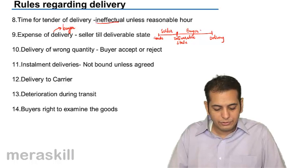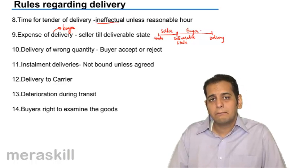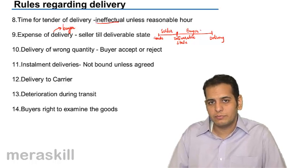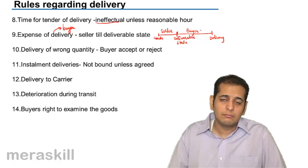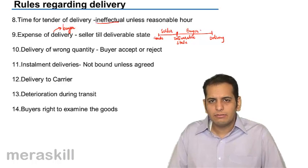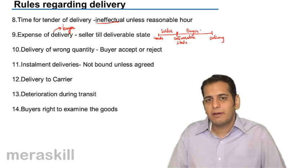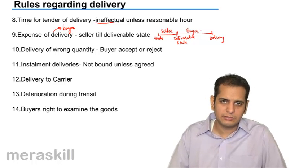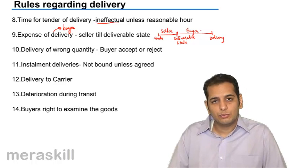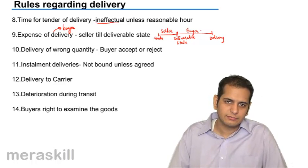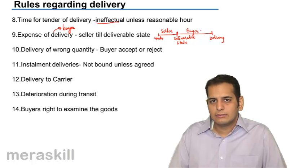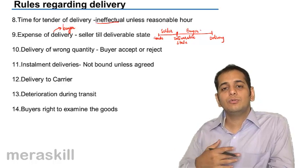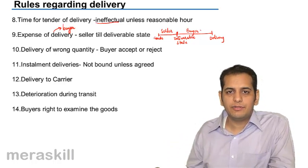Installment deliveries — this is different from part delivery. For example, you contracted for 100 bags of cotton, but only 80 bags were available with the seller. He sends the 80 bags and informs you the remaining 20 will be sent after 10 days. This is delivery in installments. In this case, the buyer has the option to accept or reject the whole delivery.